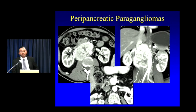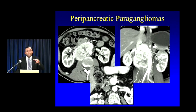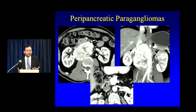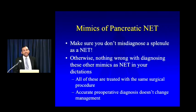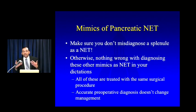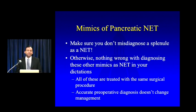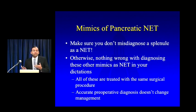For most NET mimics, accurate preoperative diagnosis isn't critical because treatment is the same. But the one diagnosis you cannot miss is when you misdiagnose a splenule as a NET — anytime you see what you think is a neuroendocrine tumor near the tail, sit back, think about the possibility it could be a splenule, and decide whether to get a nuclear medicine study for confirmation.